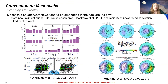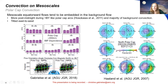Looking at polar cap convection statistically, we found more post-midnight flows during positive BY than during negative BY, similar to the polar cap arcs discussed. We also found that mesoscale flows generally tilt east to west and follow the background convection pattern. When you have positive BY, the background convection pattern is largely taking place in the post-midnight sector, and mesoscale flows tend to occur consistently with that background flow pattern.